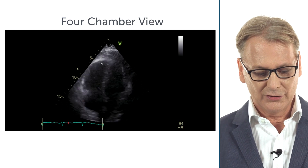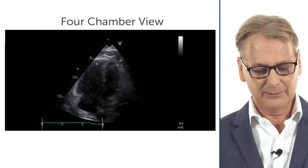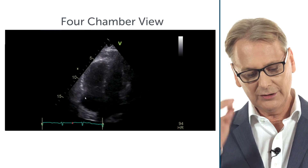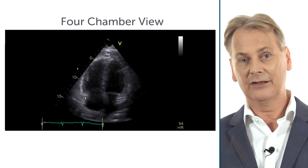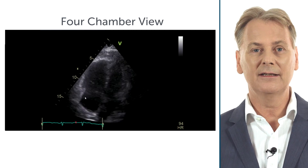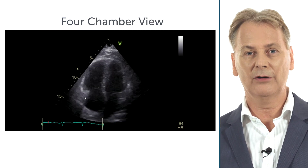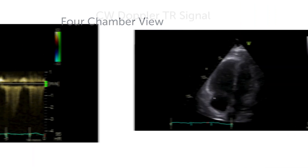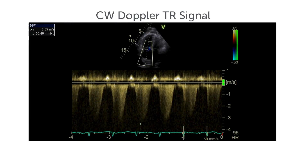There is no right ventricle hypertrophy, which practically excludes that this is a chronic problem. If you look at the TR velocity, you will see that it's also not very high — a velocity of maybe 3.4 to 3.5 meters per second.